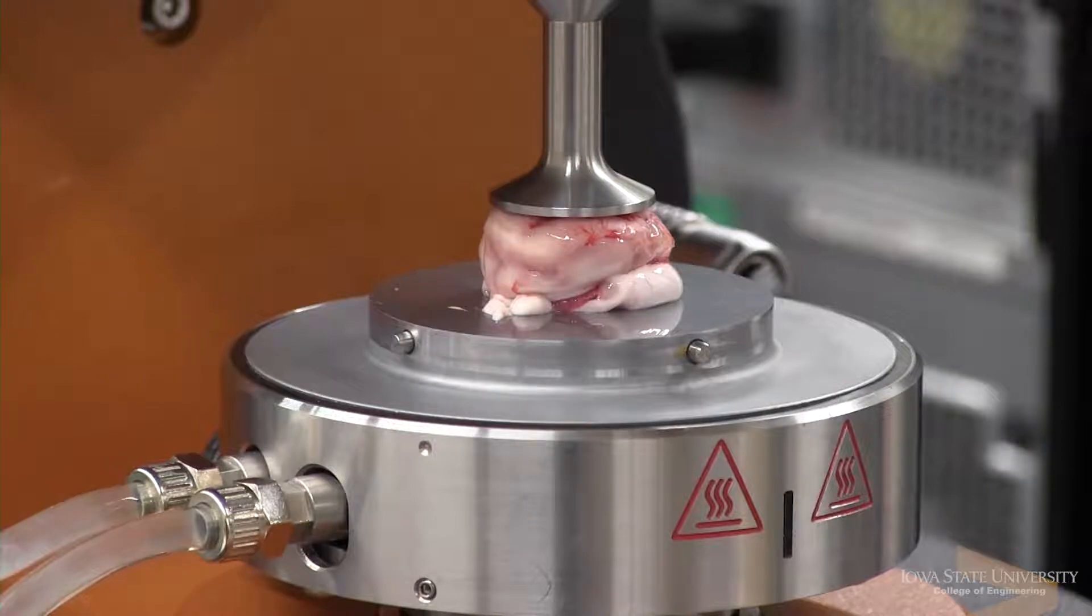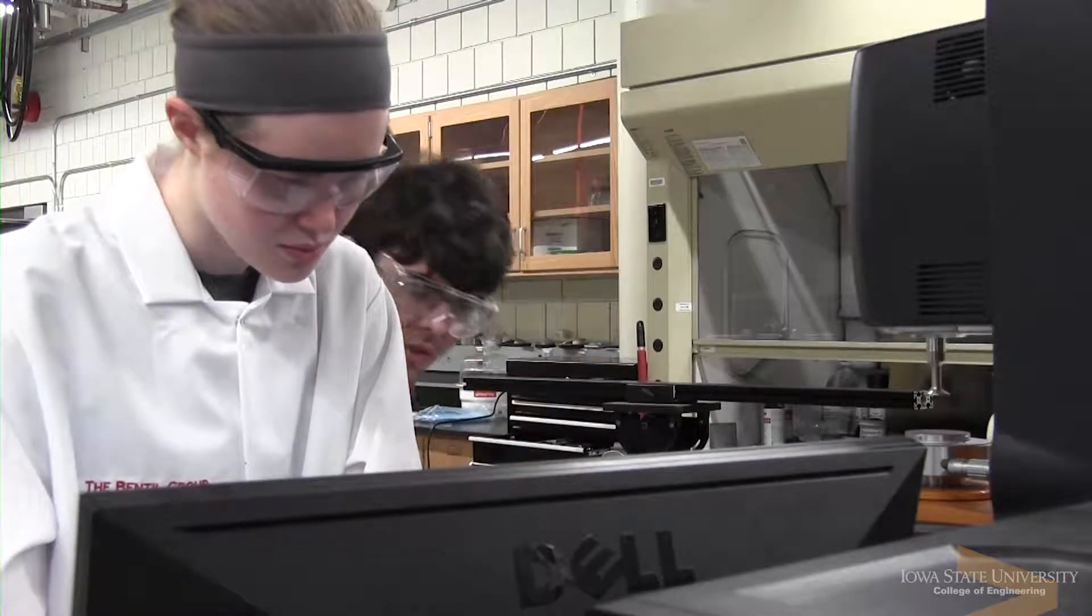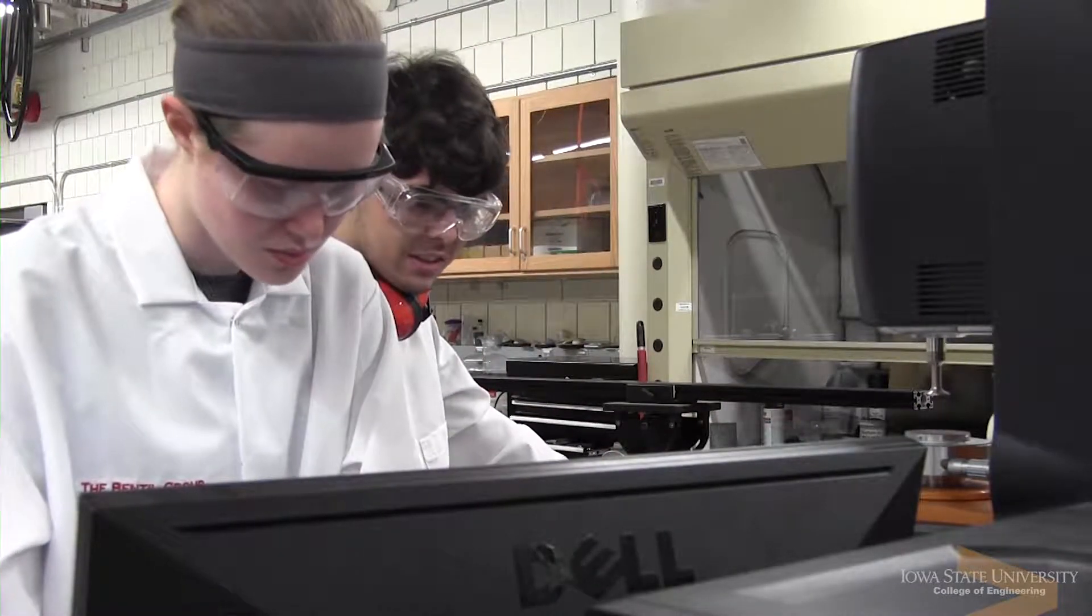Now the question becomes, how can we trick the brain into thinking that the electrode belongs there? In order for us to trick the brain, we need to develop some type of coating around the electrode with a material that behaves similarly to that of the brain, so a brain tissue surrogate.